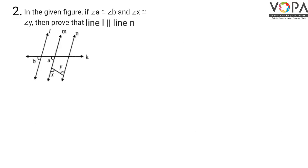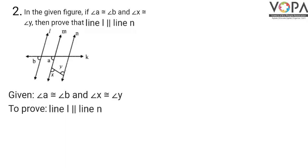In the given figure, if angle A is congruent to angle B and angle X is congruent to angle Y, then prove that line l is parallel to line n. We are given that angle A is congruent to angle B and angle X is congruent to angle Y. To prove: line l is parallel to line n.